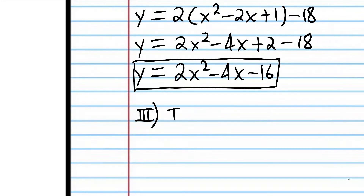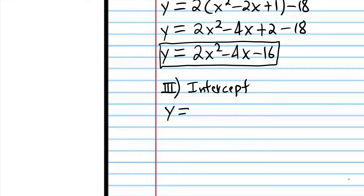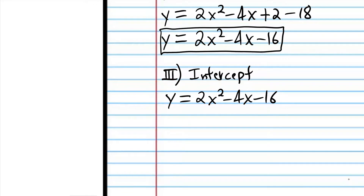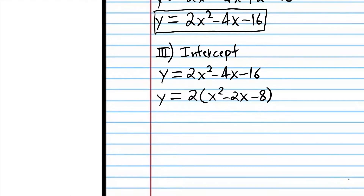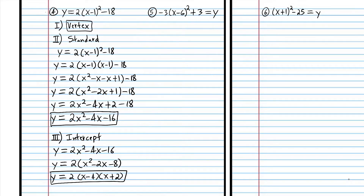Now we're going to convert to intercept form. I'll rewrite the expression from the previous step, then factor out a 2 because there's a factor of 2 in all these terms. Now we're just going to factor that quadratic: what two numbers multiply to negative 8 and add up to negative 2? That's negative 4 and positive 2. Try number 5, and when you come back, we'll do it together.